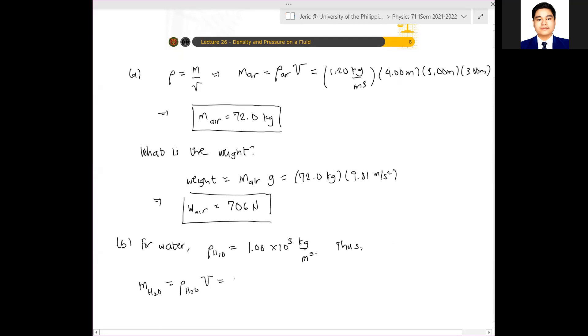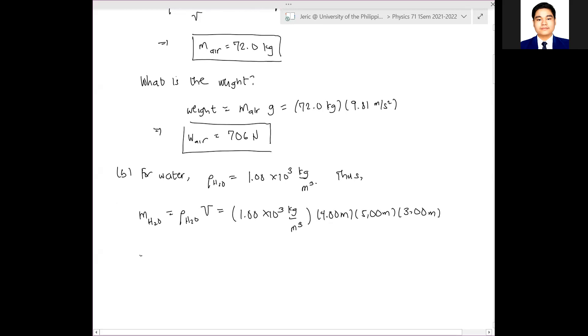Which times V, which just means this is 1.00 times 10 to the 3 kilograms per cubic meter, or 1,000 kilograms per cubic meter, times 4.00 meters, times 5.00 meters, times 3.00 meters. And from there, you will get that the mass of water is just equal to 6.00 times 10 to the 4 kilograms. Pacheck nga kung tama ito. I believe it is correct. Tama, di ba?